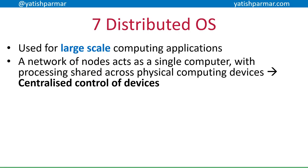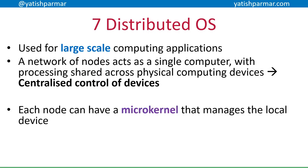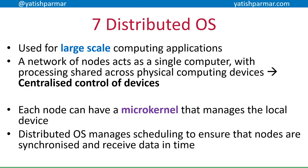Number seven is a distributed operating system, used in large-scale computing applications providing a range of services to a large number of users requiring a lot of processing power. Networks of computers work together acting as if they're a single device, sharing processing across all of them. The distributed operating system maintains centralized control over all the nodes in that network. Every node can have a micro-kernel managing the local device. The distributed OS must carefully manage scheduling so that all nodes are synchronized, receiving data in time to keep processing going.